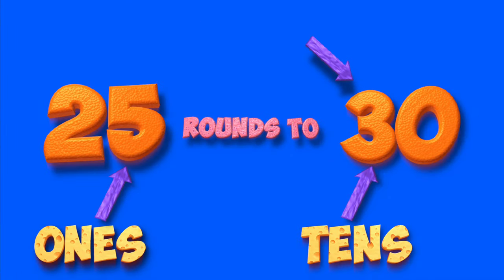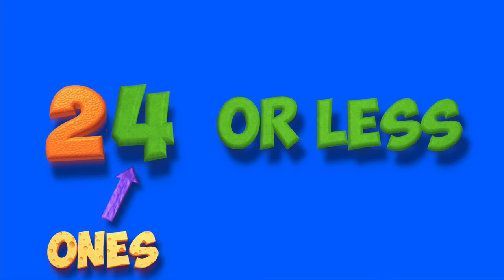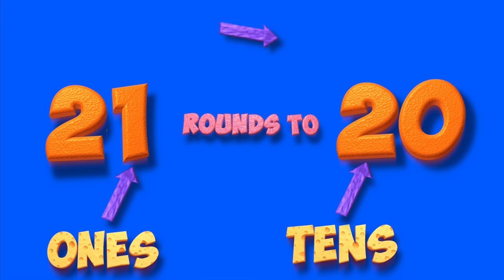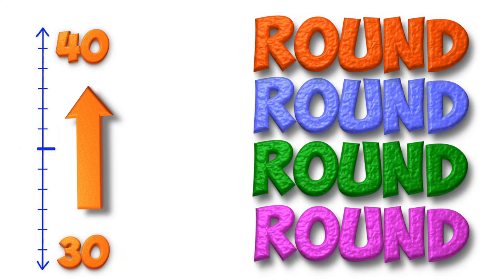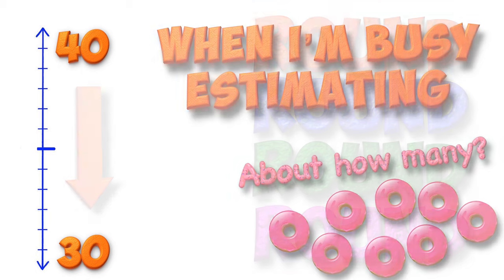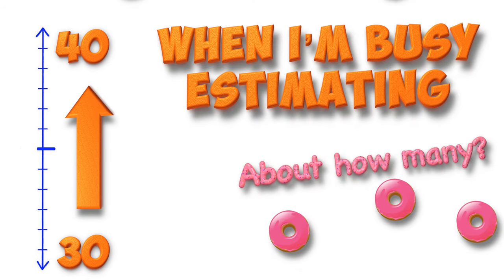It rounds to the next ten every time. If you see four or less in the ones place — 4, 3, 2, don't forget 1 — if you see four or less in the ones place, the tens stay the same, then you're done. The tens stay the same, then you're done. Round, round, round and round. I'm rounding up or rounding down. When I'm busy estimating, I'm rounding up or rounding down.